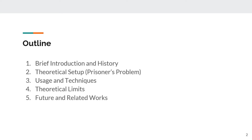More specifically, I'll start by defining key terms and a brief history that was also highlighted in the paper, then introduce the prisoner's problem, the basic setup for steganography, the modern application of steganography, and end with the author's approach to theoretical limits using entropy and what the future holds for this specific topic.